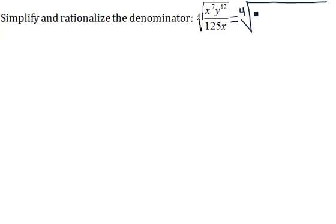So on the top, we're going to have x to the fourth, x cubed, since four and three add up to seven. And then we'll have y to the fourth, y to the fourth, y to the fourth. And that adds up to 12 over 125x.